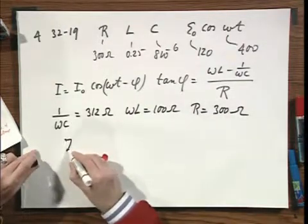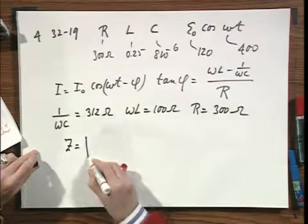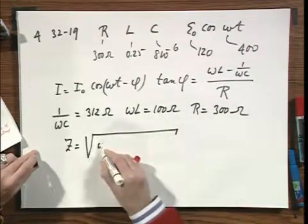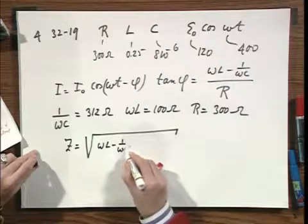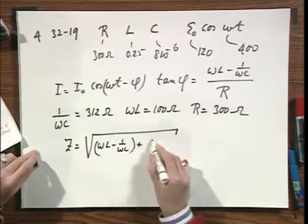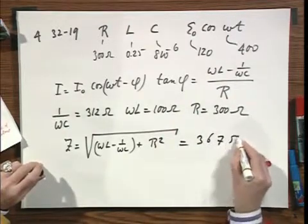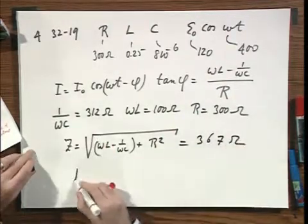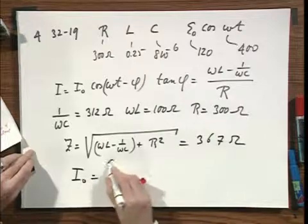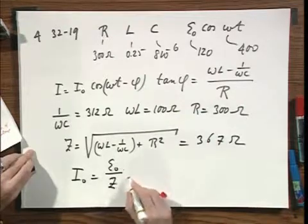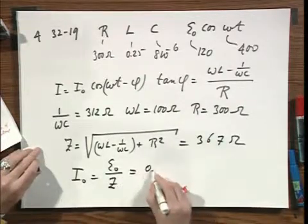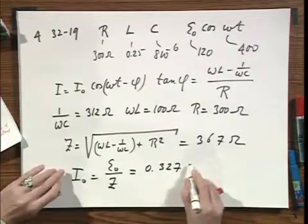And so since Z equals the square root of omega L minus one over omega C squared plus R squared, you can immediately calculate that this is 367 ohms. And since I zero equals E zero divided by Z, you'll find that this is 0.327 amperes.